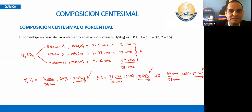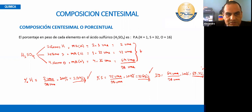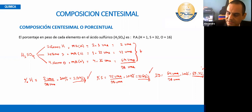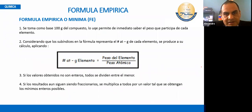¿Y para qué nos servirá eso? Este capítulo siempre se ve en las academias porque tanto en los exámenes de admisión de la San Marcos como de la UNI vienen preguntas de eso. Sirve para poder determinar la fórmula empírica y también para determinar la fórmula molecular.